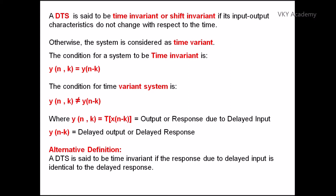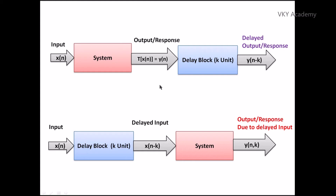Let us understand this concept in more detail. We have two block diagrams on the screen. In the first block diagram, an input signal is supplied to a system and converted to the output y(n), so T{x(n)} = y(n). This y(n) is then supplied to a delay block of k units, producing y(n − k) — the delayed output. In the second block diagram, the positions of the system and delay block are interchanged. The input signal is first supplied to the delay block of k units, producing a delayed input, which is then supplied to the system. The output we receive is y(n, k) — the response due to the delayed input.